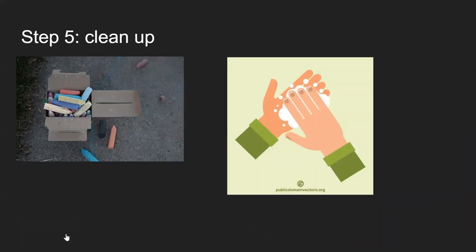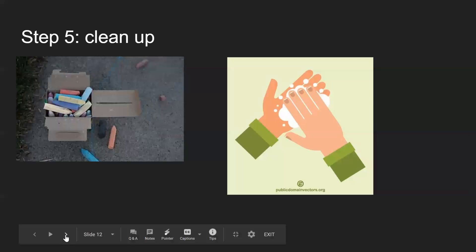Step five is cleaning up. If you did the paint method or just handled chalk in general, you'll have chalk all over your hands — so make sure you put your chalk up. If you did the water method on your chalk cave painting, try to avoid stepping on it so you don't track it in. Then go and wash your hands. Chalk is a very messy thing, but it's very handy for this project and easy to use.